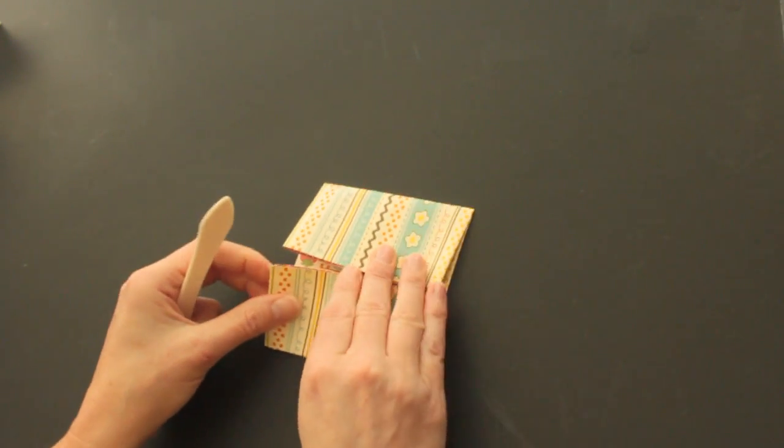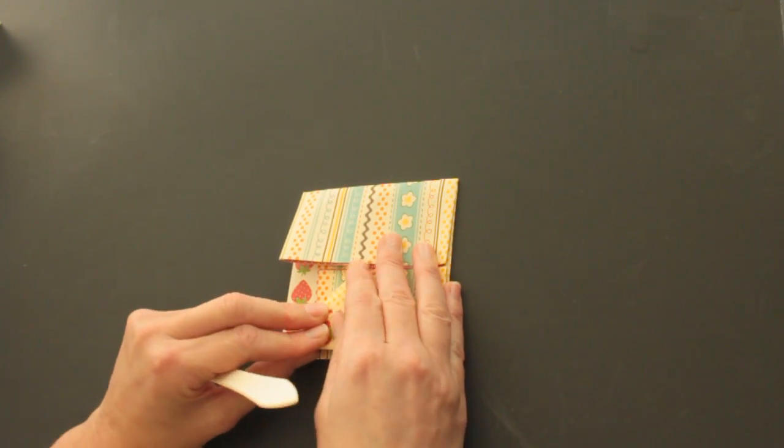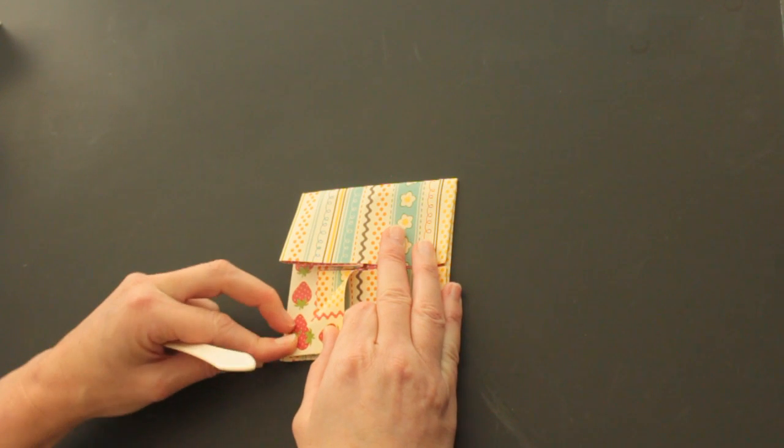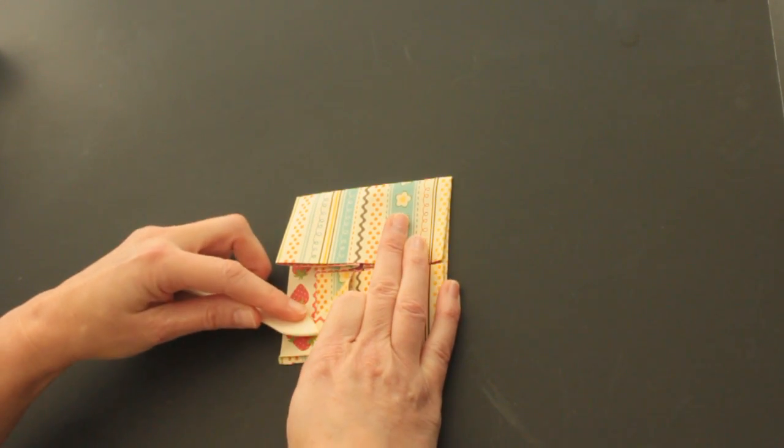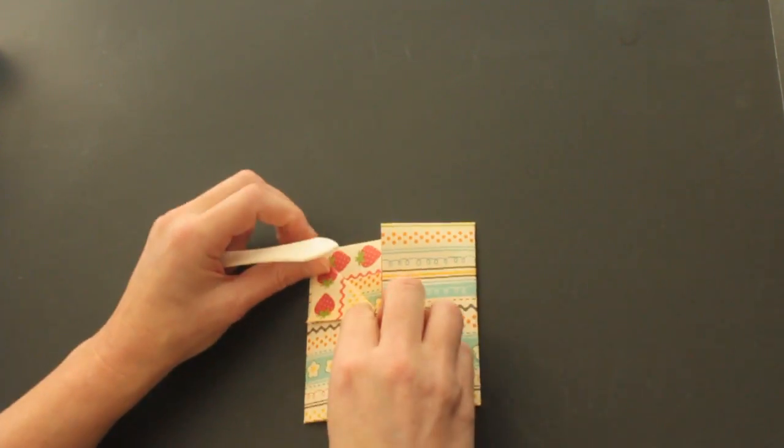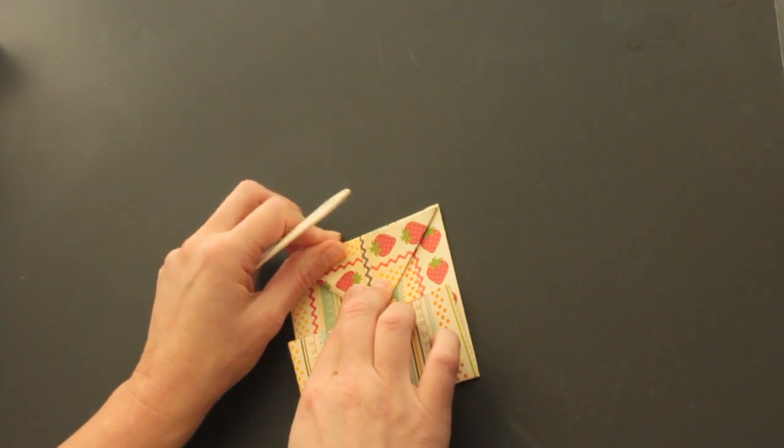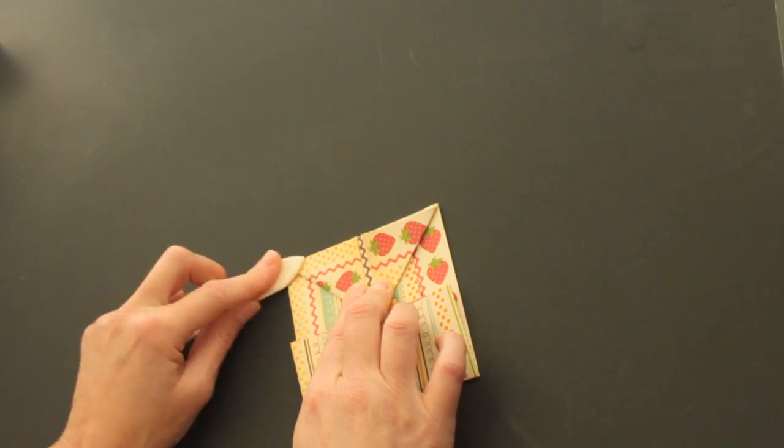Now you take one of the corners and carefully fold it down without cutting it out. Try not to break the paper on top and on the bottom. Rather have it a little bit crooked than have it ripped. You do that on all four sides.